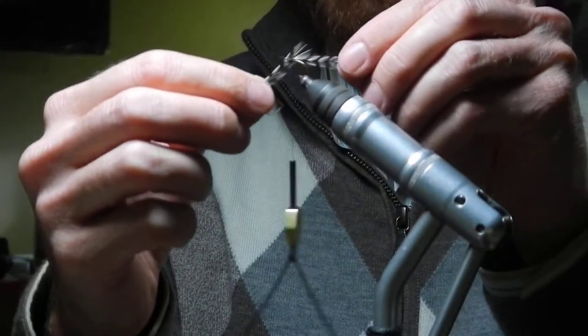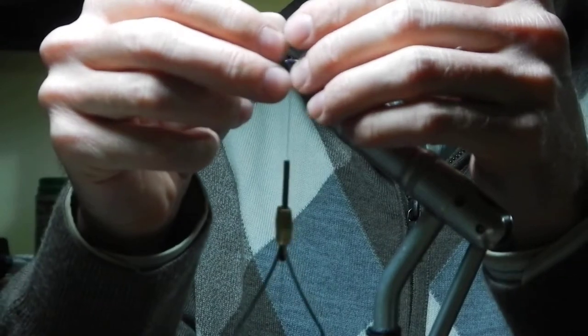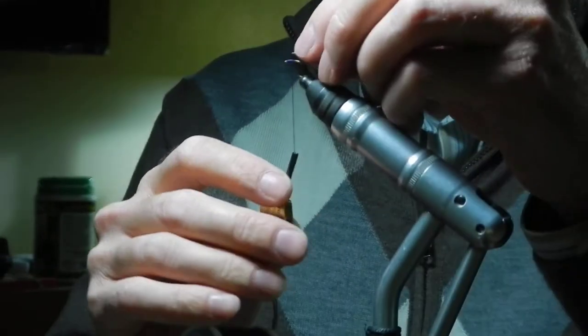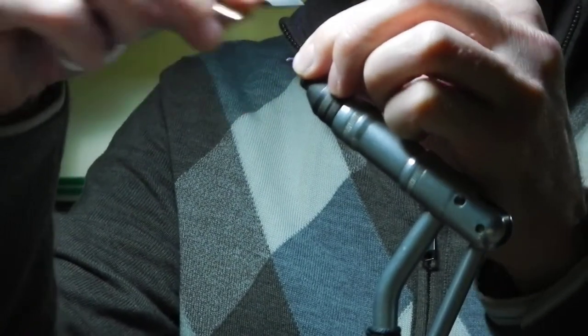It's very oversized. It's probably size ten hackle, maybe eight hackle. This is a size 12 Mustad C49 hook.